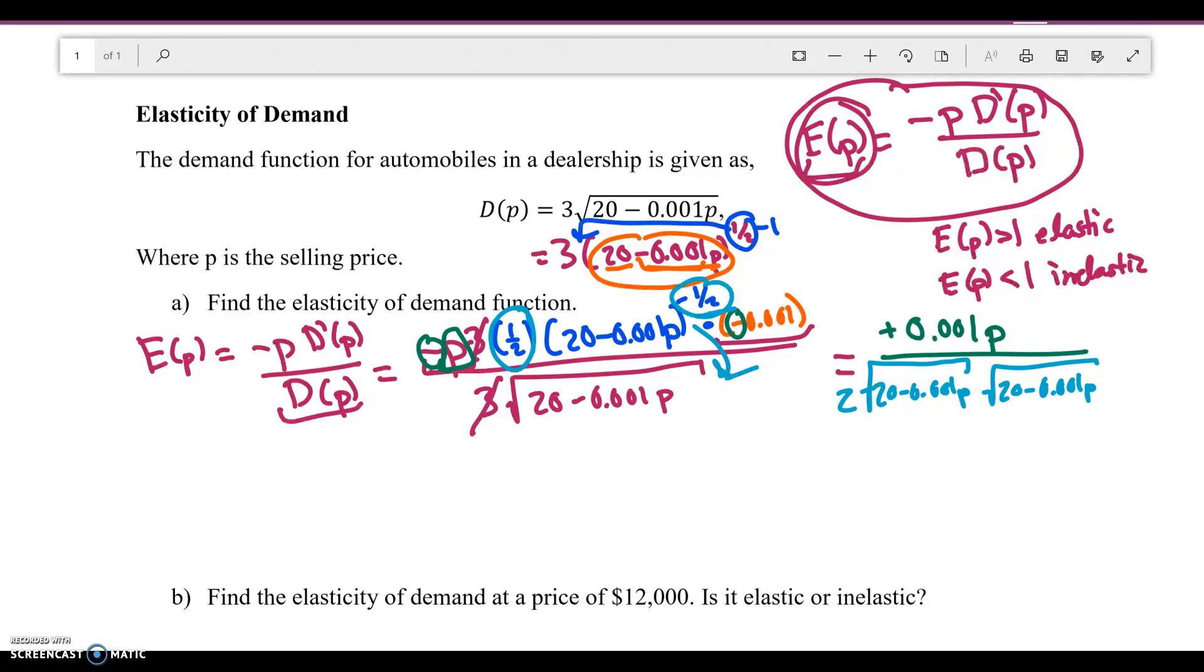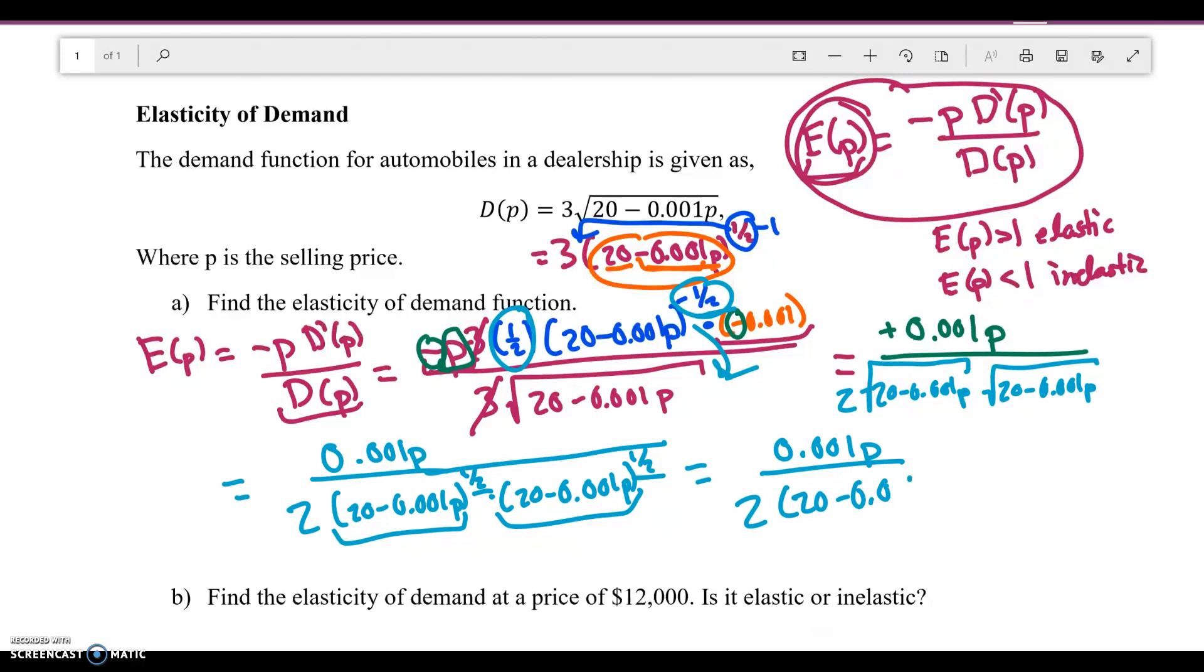If the square roots really freak you out, what you can do is write it like this: 0.001P divided by 2, and then you have 20 minus 0.001P to the power of 1 half times 20 minus 0.001P raised to the power of 1 half. You know that I can combine these terms together, the 1 half and the 1 half just give me a 1, so these two things are just going to have a power of 1. So this is going to be 0.001P divided by 2 times 20 minus 0.001P to the power of 1, but you don't really need to do that. And that's basically it for that problem.